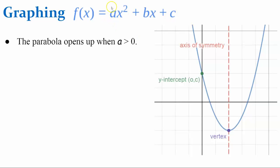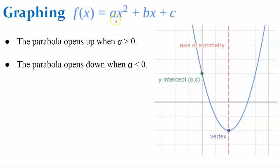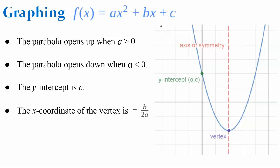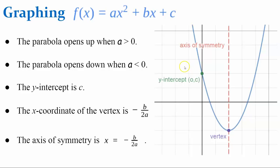We know that the parabola will open up when a is greater than 0, and the parabola opens down when a is less than 0. The y-intercept is the value of c. The x-coordinate of the vertex is found using the formula negative b divided by 2a. Therefore, the axis of symmetry is the line x equals negative b divided by 2a, where b is the coefficient of x and a is the coefficient of x².